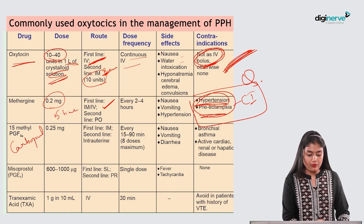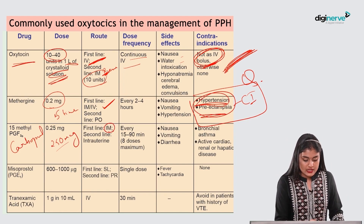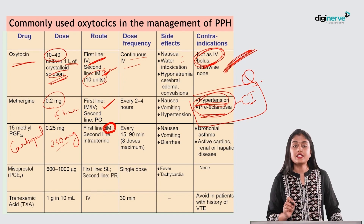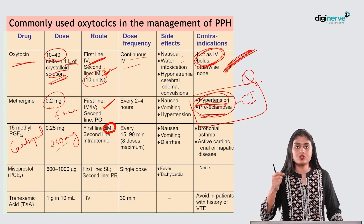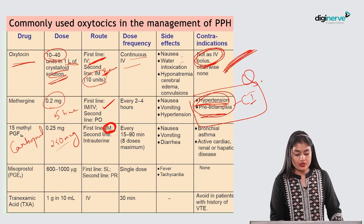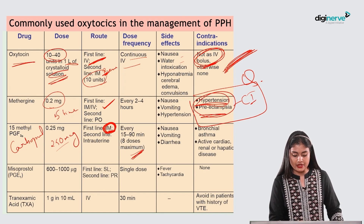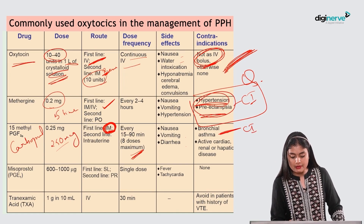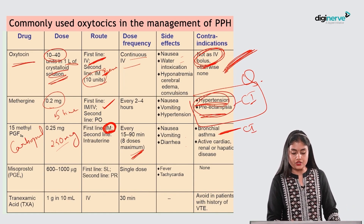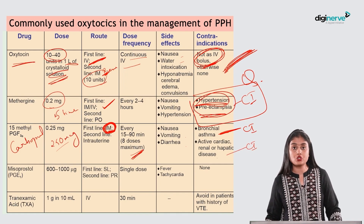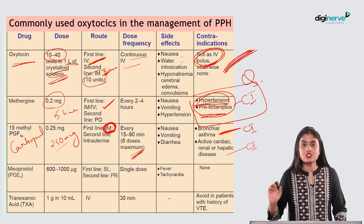Carboprost (prostaglandin F2 alpha) dose is 250 micrograms IM only — it is never given IV. It is a second-line treatment, given every 15–90 minutes with a maximum of eight doses. Side effects include nausea, vomiting, diarrhea, and bronchoconstriction. It is therefore contraindicated in bronchial asthma, active cardiac, renal, and hepatic disease.